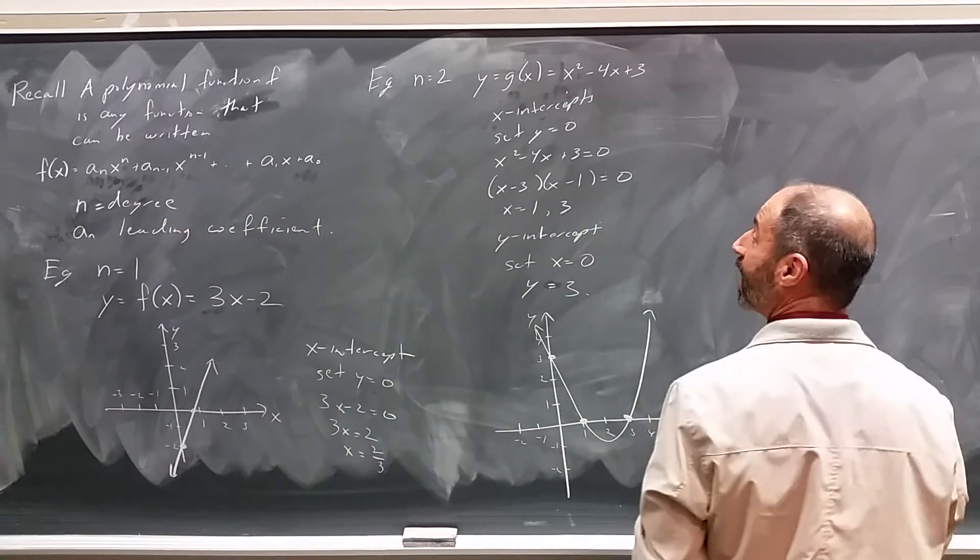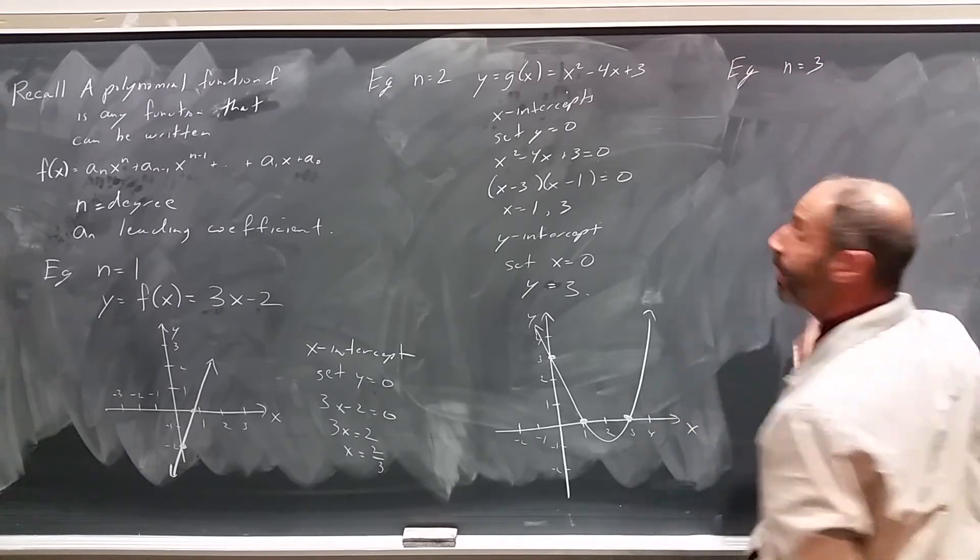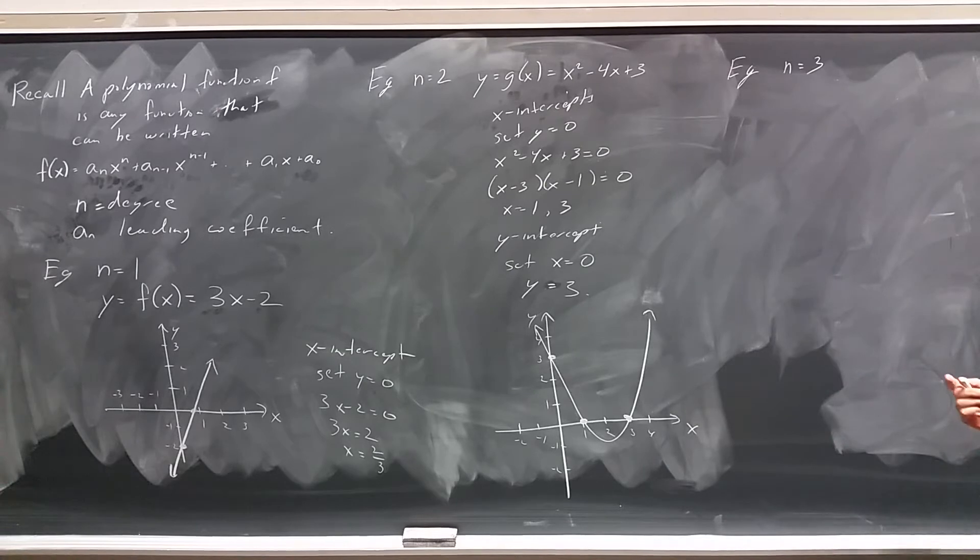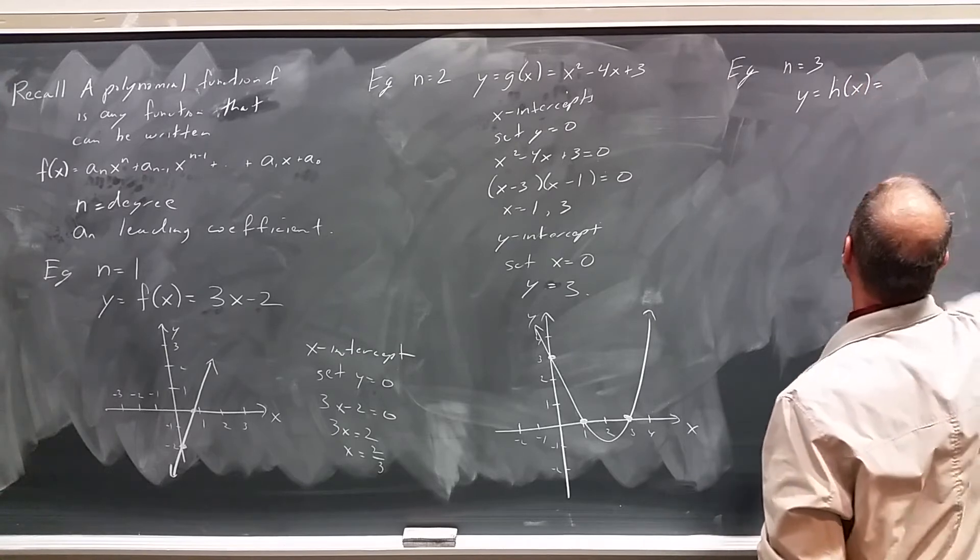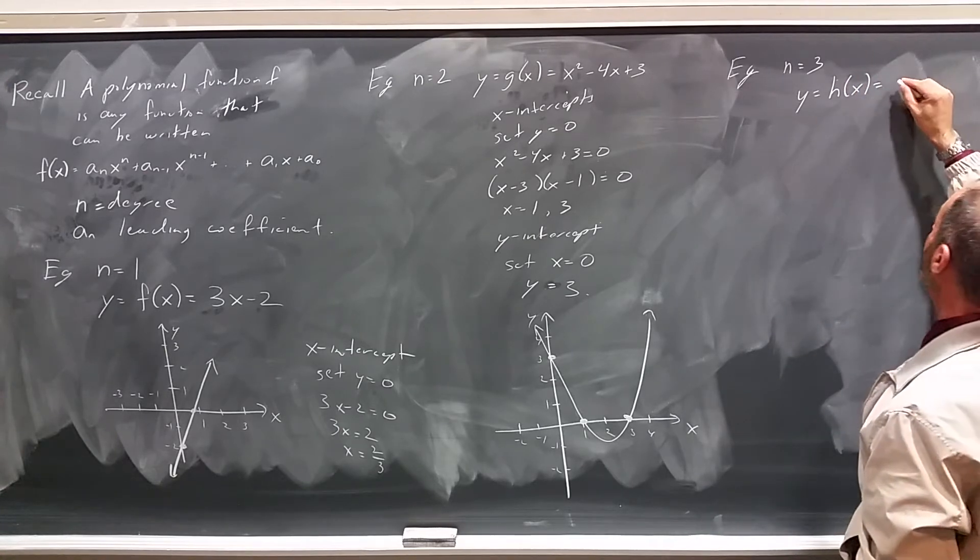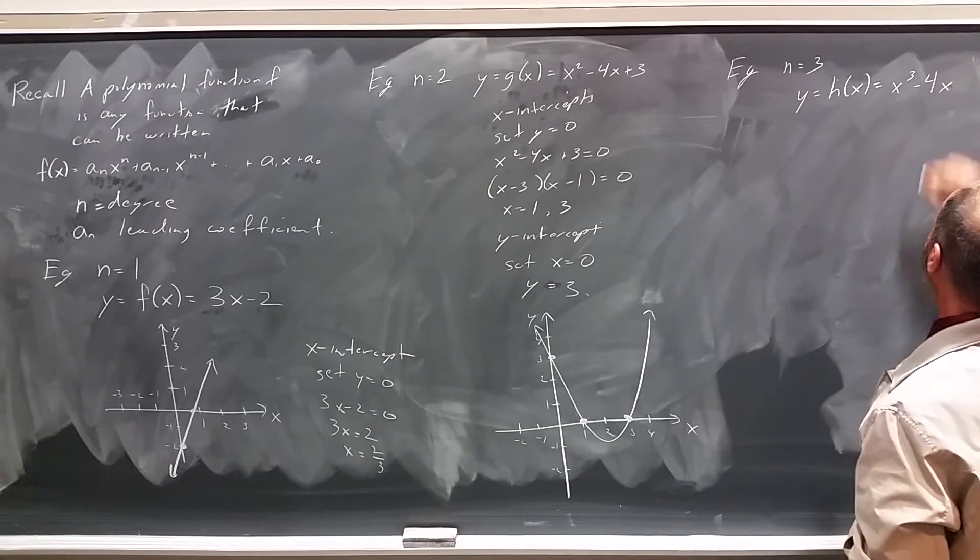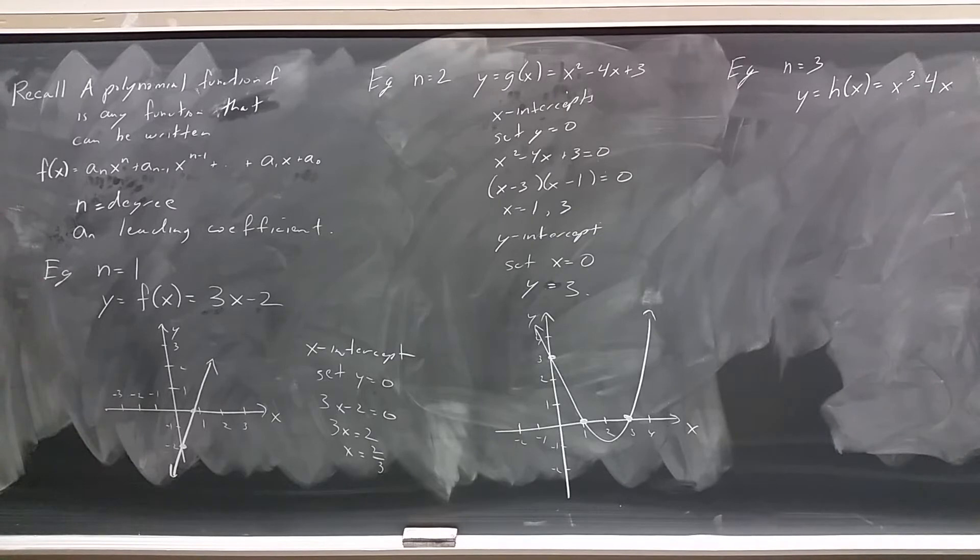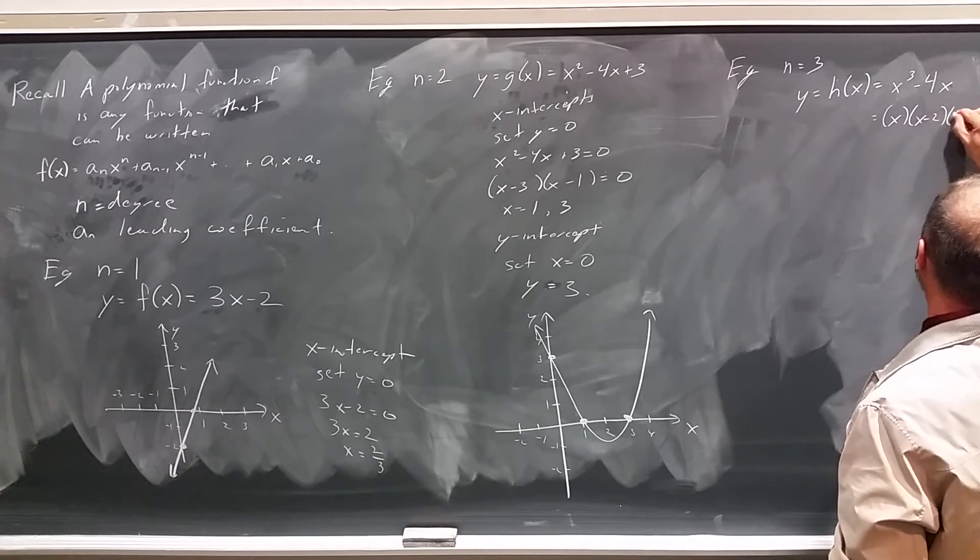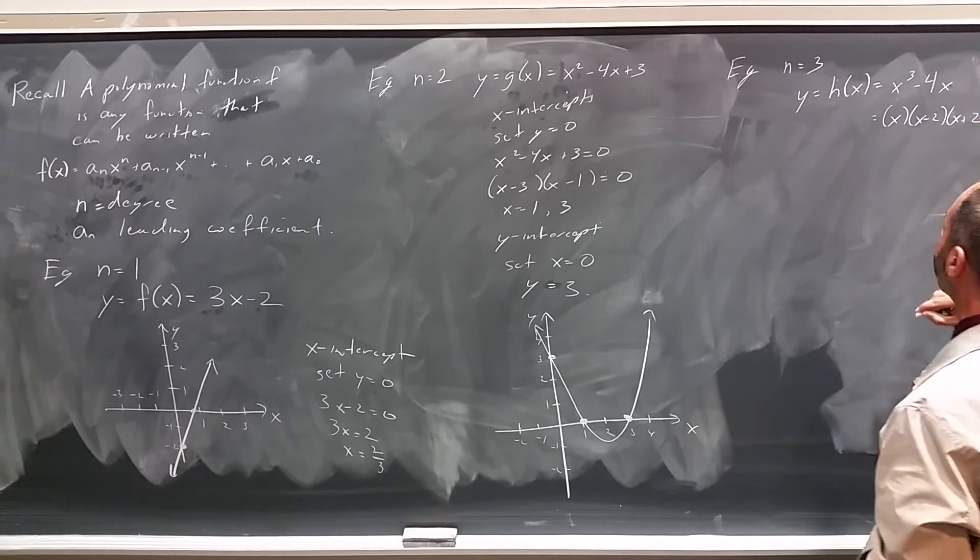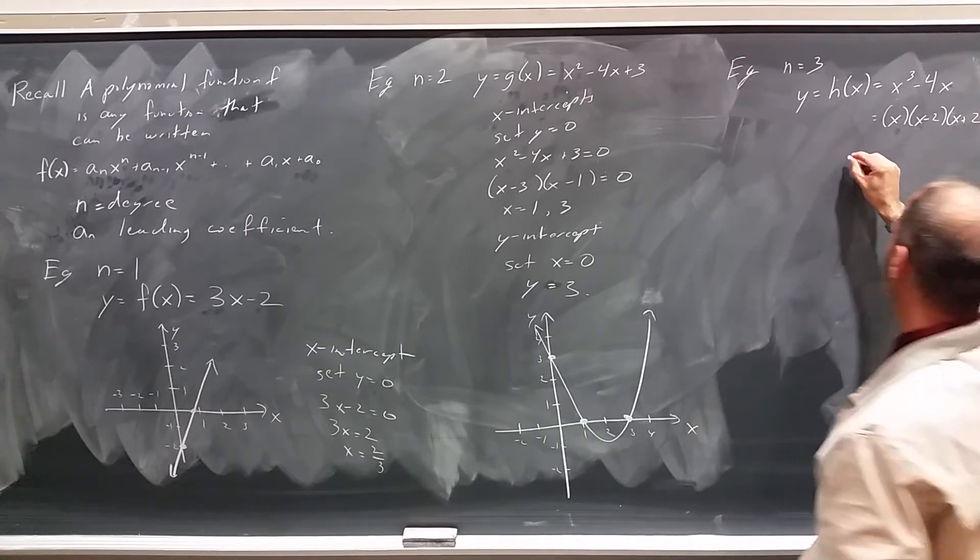Let's take a look at another example, this time with n equals 3. This is a cubic. I want to begin with this example: y equals h(x) and I will let h(x) be x³ minus 4x. And that factors as x times (x minus 2) times (x plus 2). And we can see right away that this thing crosses the x-axis at 0, 2, and minus 2.